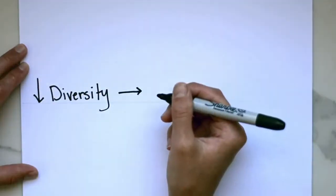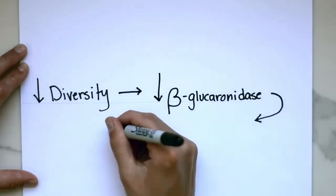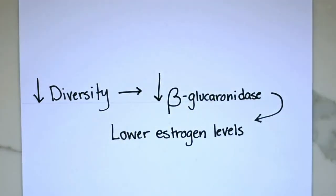On the other hand, a lack of microbial diversity can result in lowered beta-glucuronidase activity, leading to lower estrogen levels.